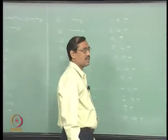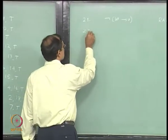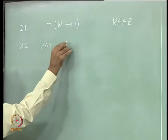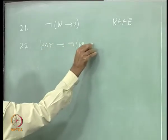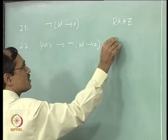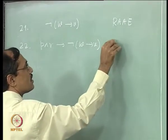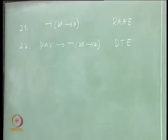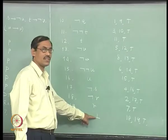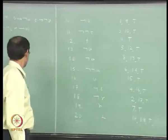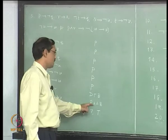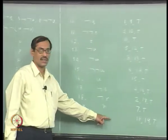Is it clear? There, you are using the deduction theorem. So p and r implies not of w implies v. Here ends the deduction theorem. And you can also document the line numbers — you are getting this because of the 7th line, 8th line, and 19th line.